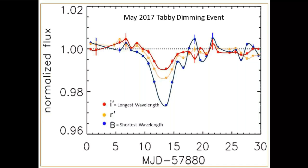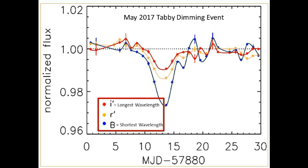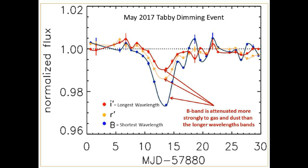For our second topic, this is the graph of the short-term dimming event of Tabby's Star in May of 2017. There were three different filters being used to measure the flux. The red line represents the filter with the longest wavelength bandpass, and the blue line represents the filter with the shortest wavelength bandpass. We bring this graph up because we are going to make a conclusion about the long-term dimming and what the blocking material is and is not.